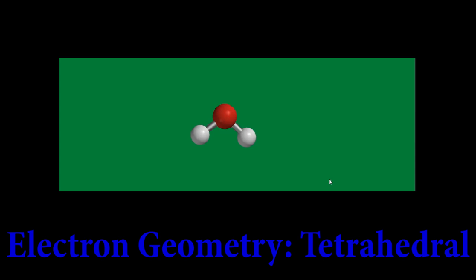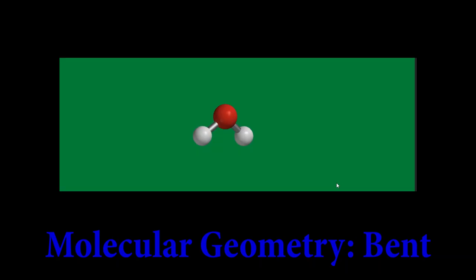If we ignore those two lone pairs, we can see that the two hydrogens are in a sort of bent conformation, so the molecular geometry is bent.